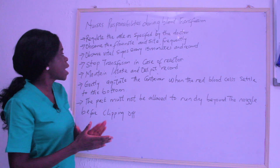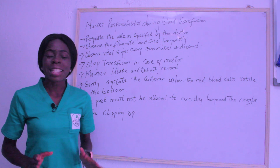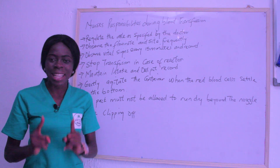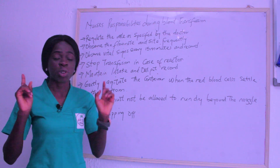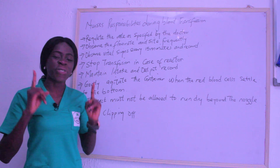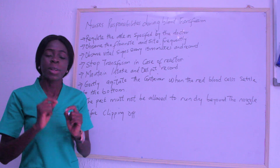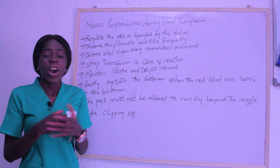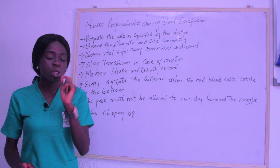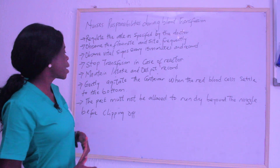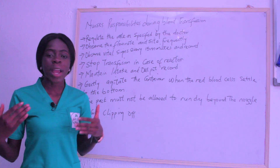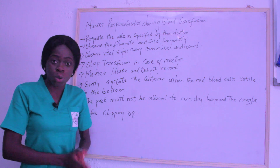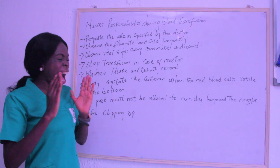Observe and record vital signs every 15 minutes during blood transfusion, as vital signs are fundamental data that help check the physiology of the body. Stop the transfusion immediately in case of any reaction — reactions could include hypothermia, hyperthermia, or allergic reactions such as rashes. Also maintain an intake and output record, monitoring how many bags or pints of blood have been given and monitoring the patient's output.